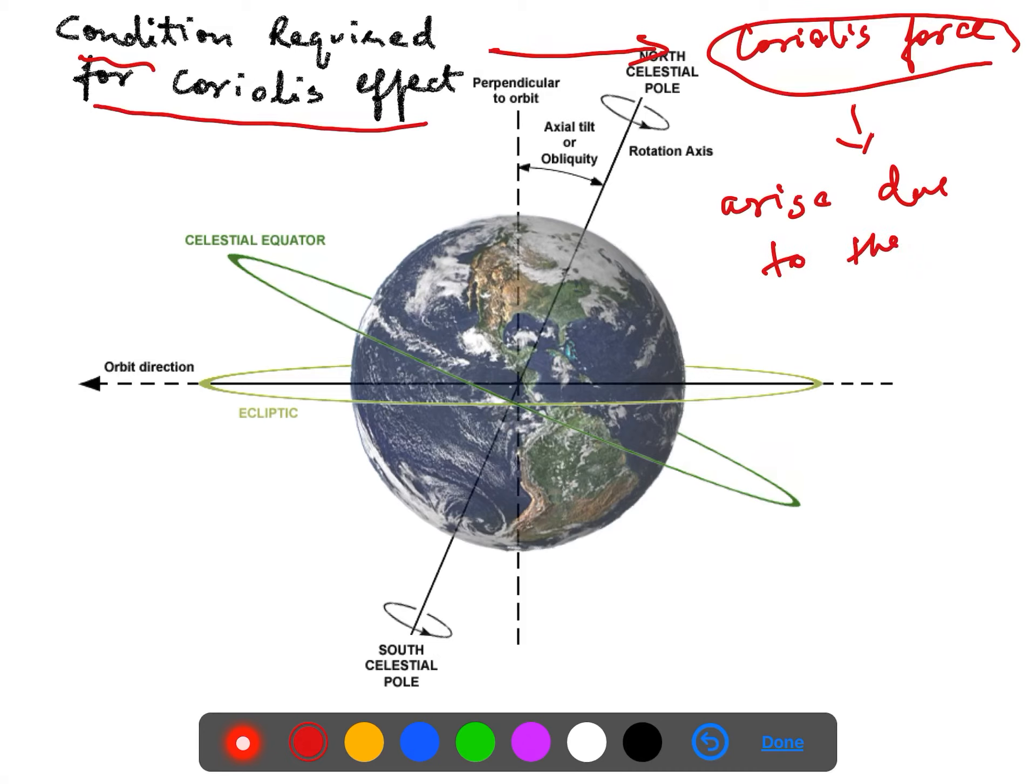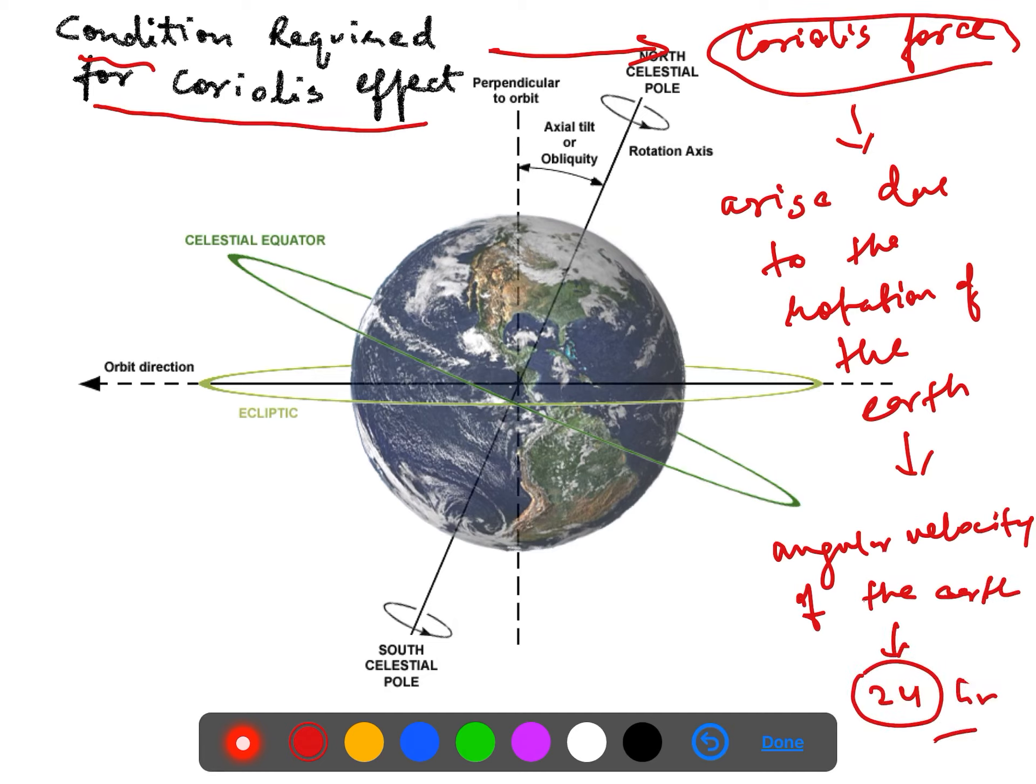Earth is spinning and this force is developed. If the earth is spinning at a greater speed it will be more. If it is moving with a slower speed it will be less. Since the angular velocity is very important here, angular velocity of the earth. We know earth is spinning on its own axis with a period of approximately 24 hours.